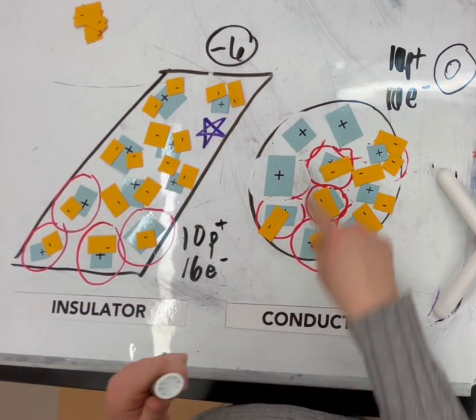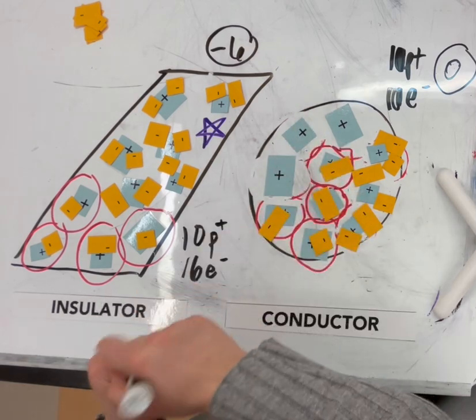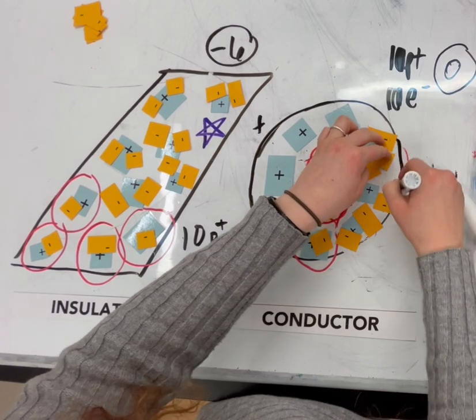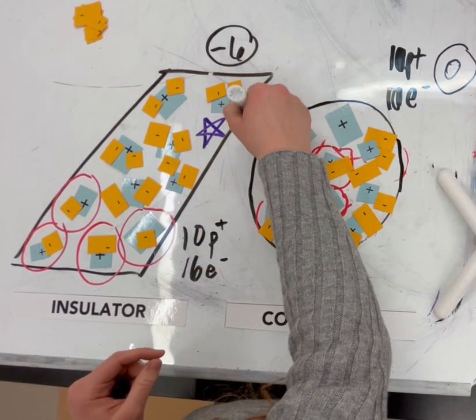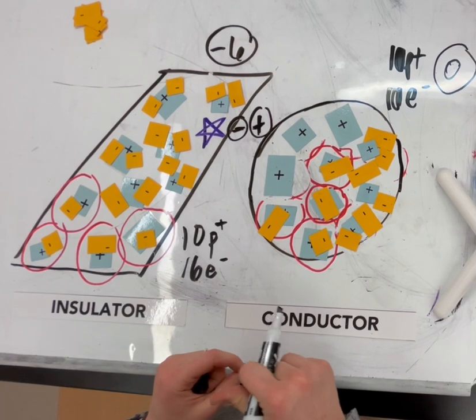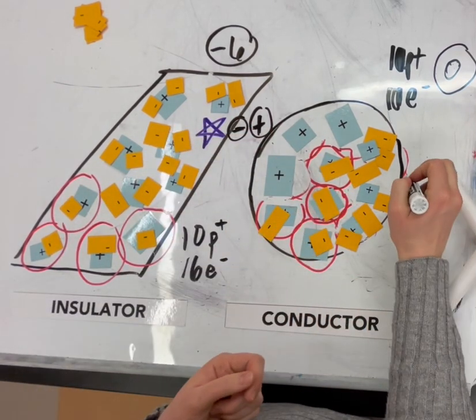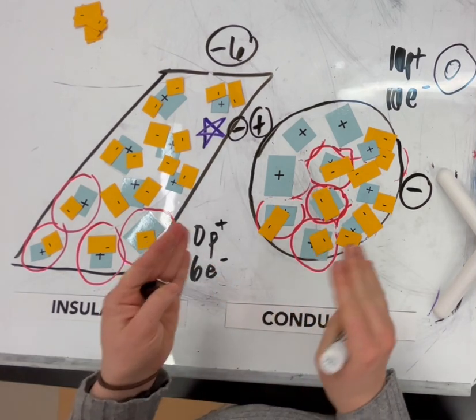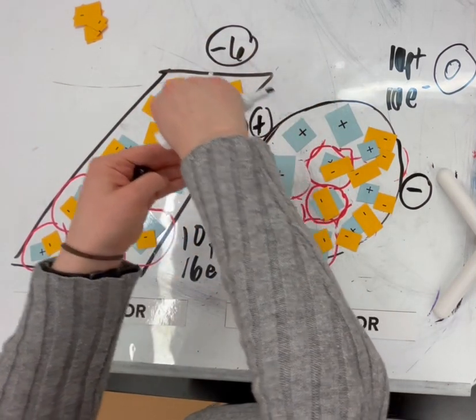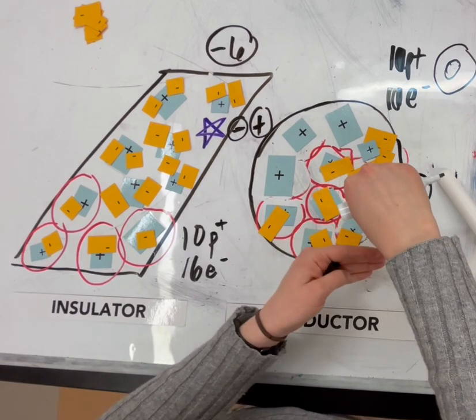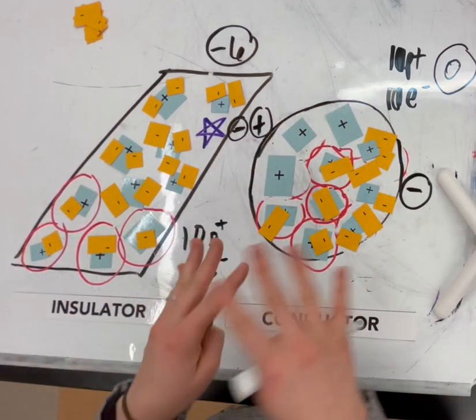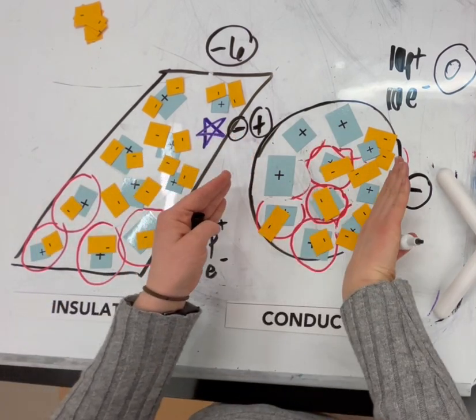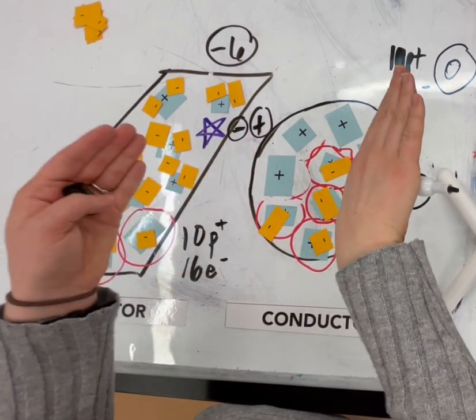So here we're noticing a positive charge on the pithball that is close to the negative charge of the strip. But we're also noticing a negative charge on the right. So electrons in the pithball transferred from the left to the right side. They did not leave the pithball. They didn't go from the pithball to the strip. They just moved within the pithball itself.